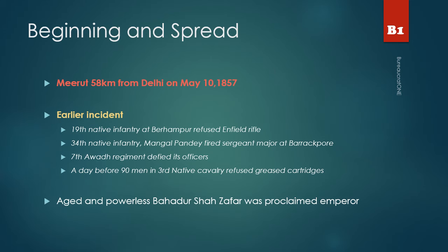First and foremost, let's see where the revolt started, when it started, and by whom it started. The revolt started in Meerut, which is 58 km from Delhi, on May 10th of 1857.